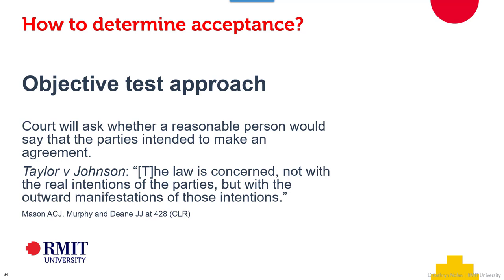It doesn't matter what the parties actually intended. What matters is what a reasonable person in the position of the parties would have understood. Taylor v Johnson is the seminal case. Acting Chief Justice Mason and Justices Murphy and Deane say: as far as the law is concerned, not with the real intentions of the parties, but with the outward manifestations of those intentions. You might have had absolutely no intention of going through with a contract, but if you signed it, shook hands, and said yes, it doesn't matter. The outward manifestations of behaviour demonstrate intention and, as a consequence, acceptance and the creation of a contract.